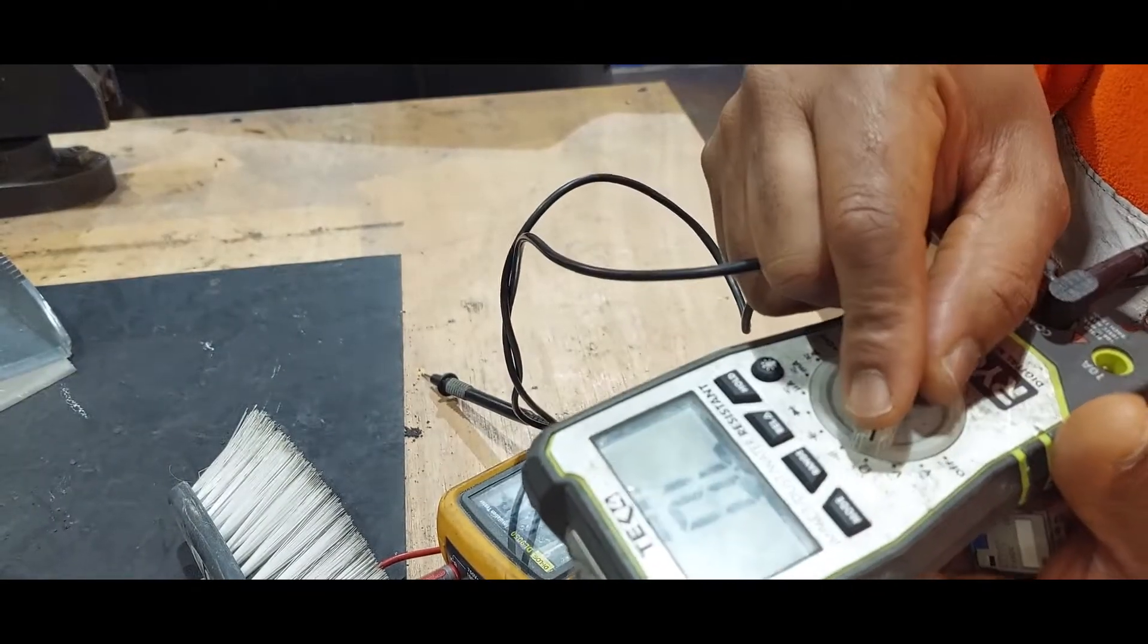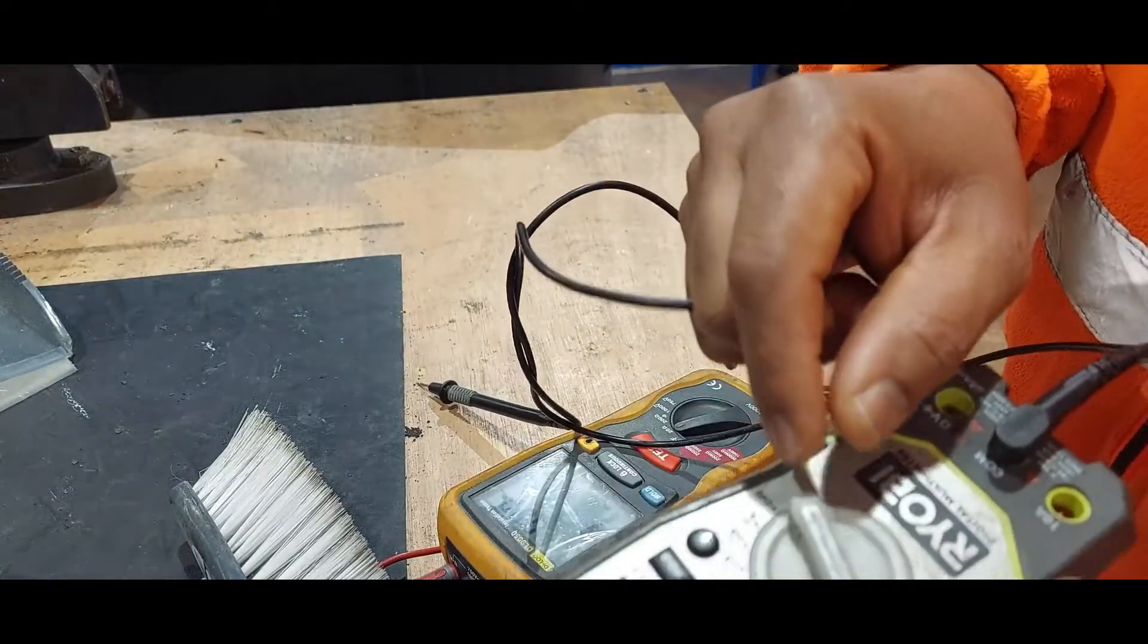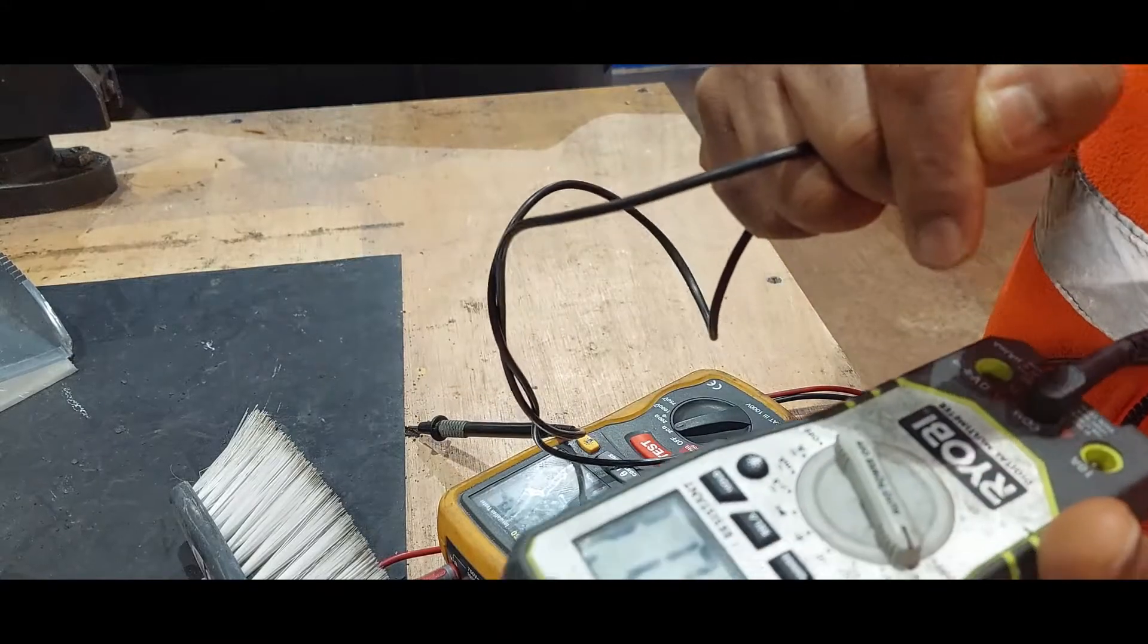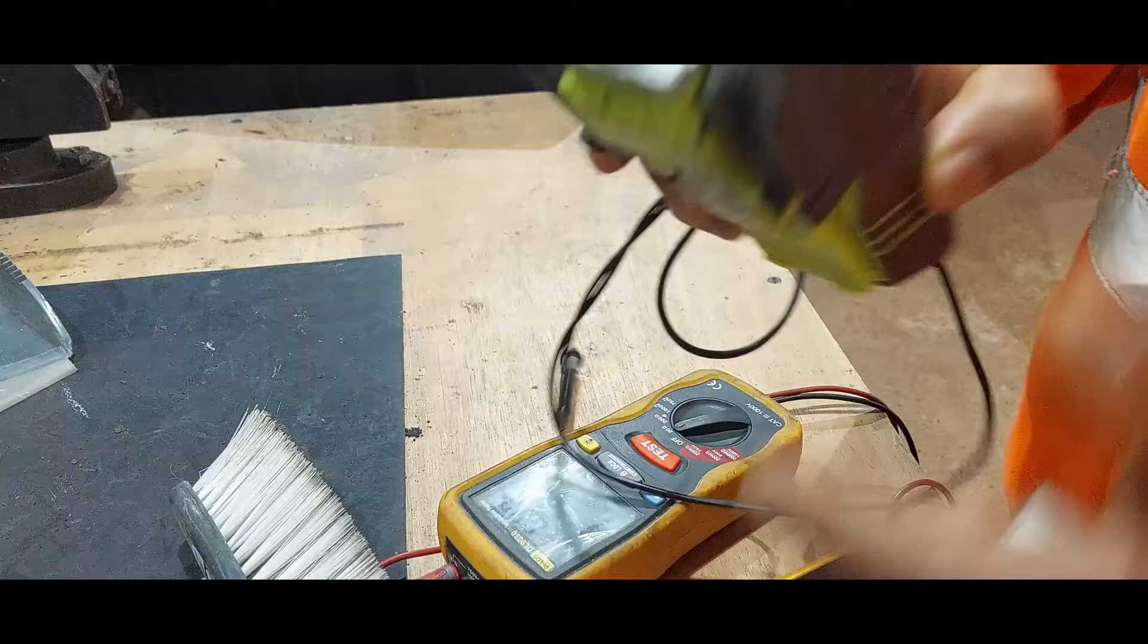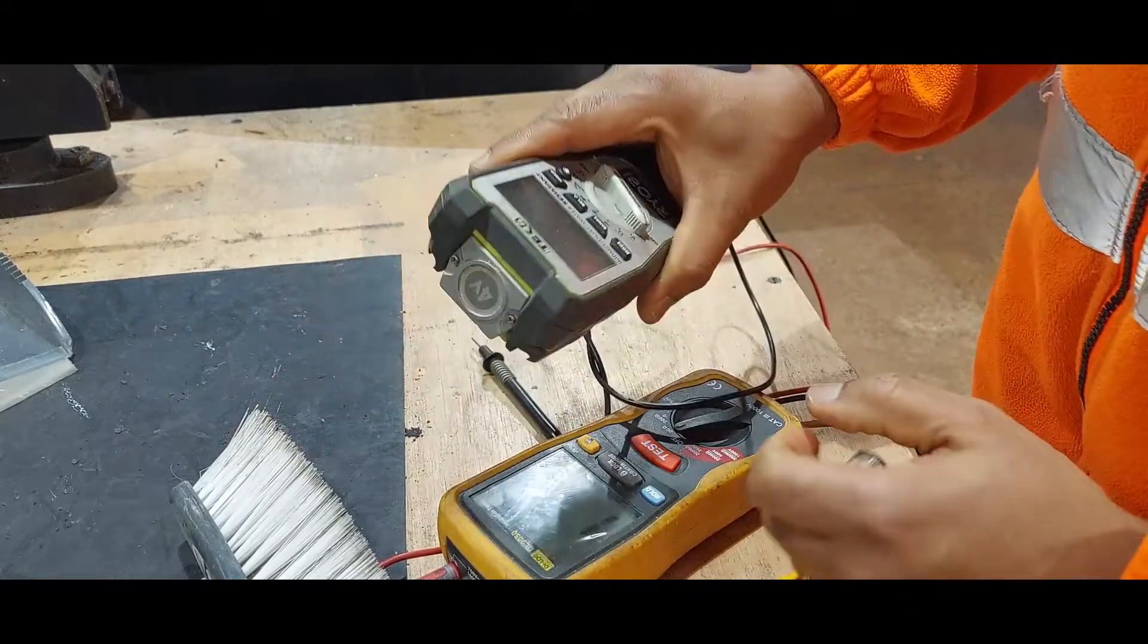When the circuit is live, you can only measure current and voltage. But never measure resistance. If you measure resistance, it will damage your multimeter. Proof of that is that these two are damaged.